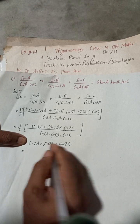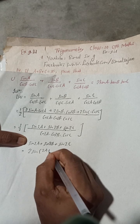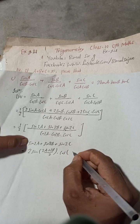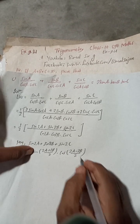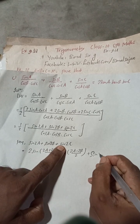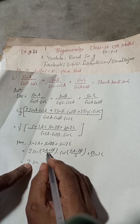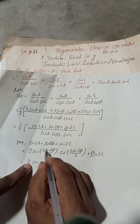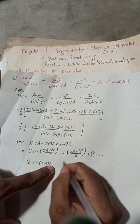Now, sin 2A plus sin 2B: applying the formula sin C plus sin D equals 2 sin((C+D)/2) cos((C-D)/2), this becomes 2 sin(A+B) cos(A−B). Then we take two common, so we get 2(A+B) and 2(A−B) simplified to (A+B) and (A−B) respectively. Plus sin 2C remains as it is.